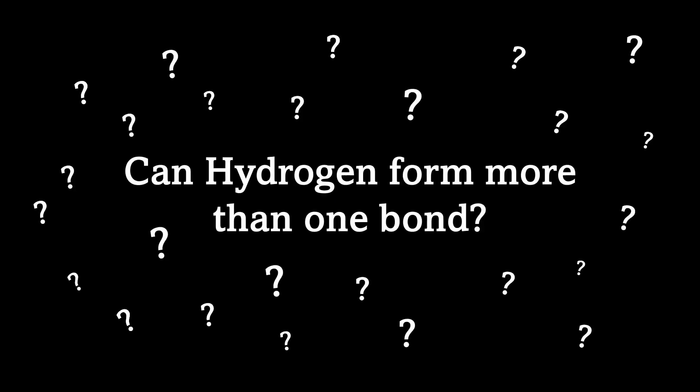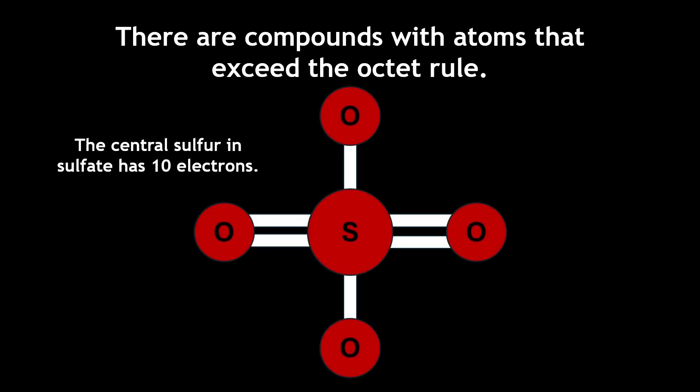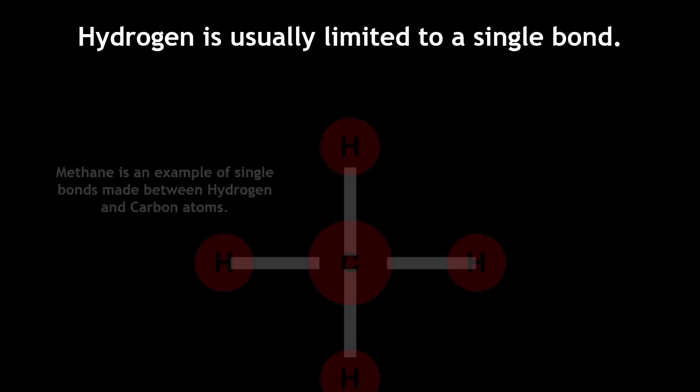But can hydrogen form more than one bond? While there are compounds with atoms that exceed the octet rule, such as sulfate, due to their access to more electrons, hydrogen is usually limited to a single bond.